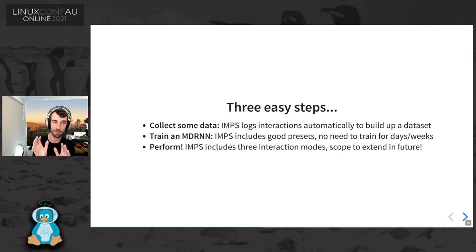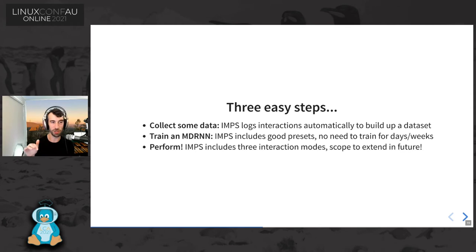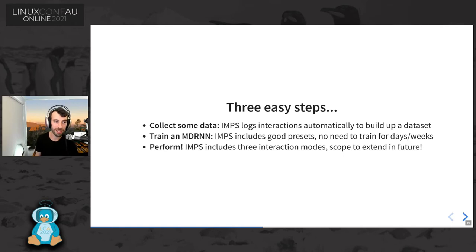The most important thing is that IMPS lets you perform with the system. I've got three interaction modes built into IMPS — deciding when it should make predictions and when it should listen to the human. The interaction mode I use most commonly is call and response. When I'm playing on the interface, it receives my messages and doesn't perform — all it does is run my gestures through the RNN so the RNN knows where I'm up to and its memory state has been updated. If I stop performing for some amount of time, maybe two seconds, then IMPS starts to predict from that RNN and continues the performance from where I left off. Then as soon as I touch the interface again, I start playing.